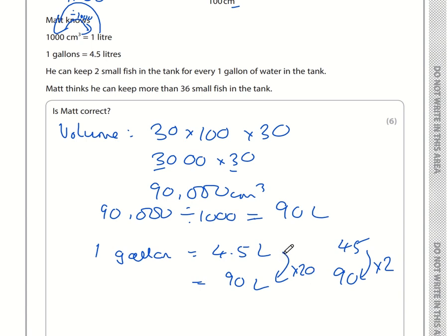What we need to do now is convert litres into gallons. One gallon is 4.5 litres, and we've got 90 litres. 45 minutes is half of 90 minutes. To go from 45 to 90, you're multiplying by 2. So from 4.5 to 90, you're multiplying by 20. So 90 litres is 20 gallons. He can keep 2 fish per gallon. If he has 20 gallons, he can keep 40 fish. Matt is correct.